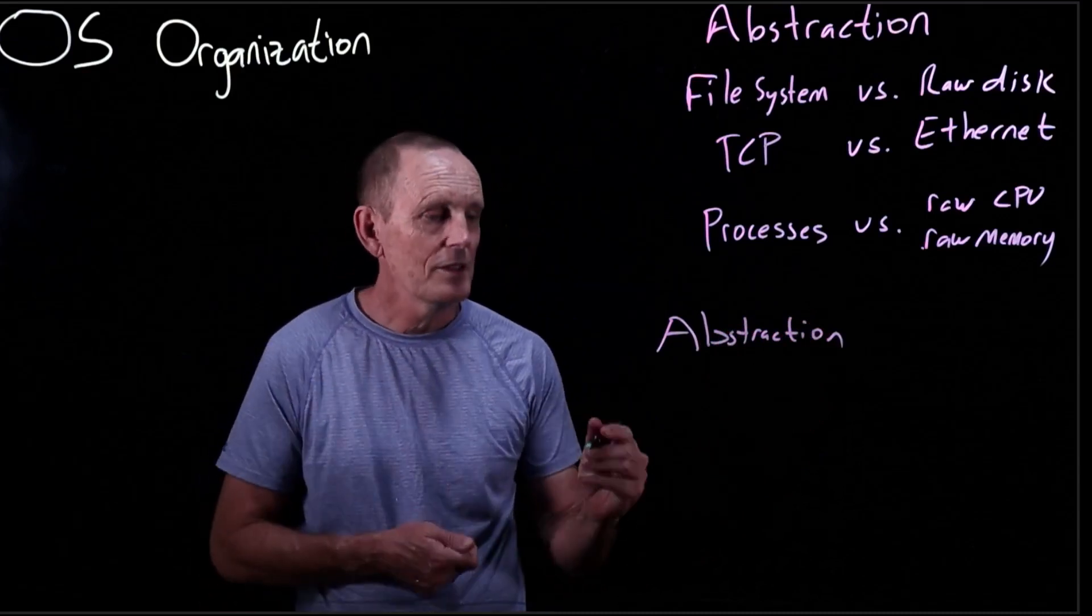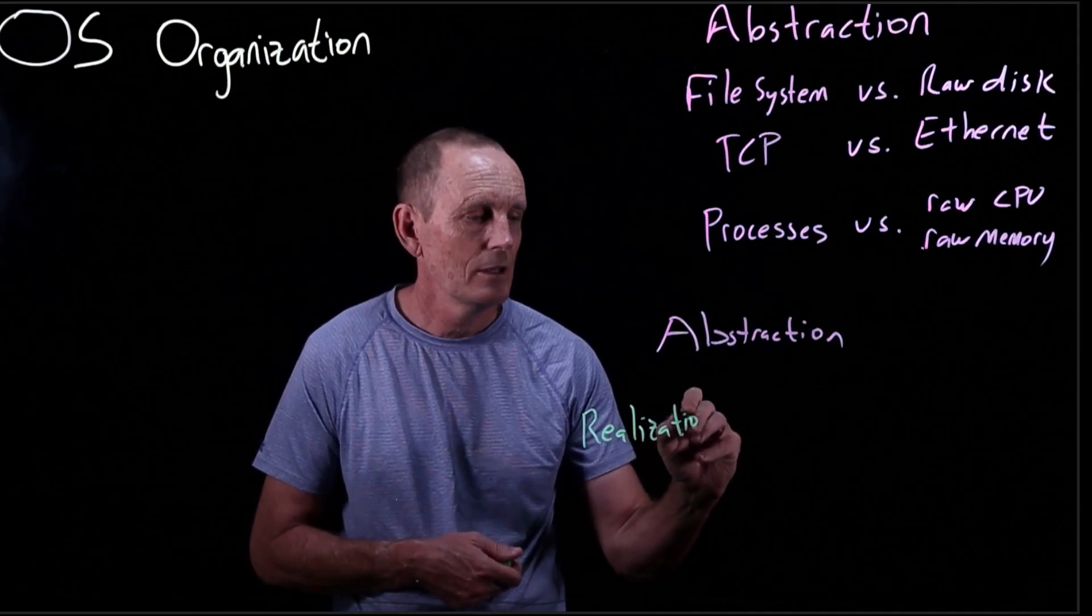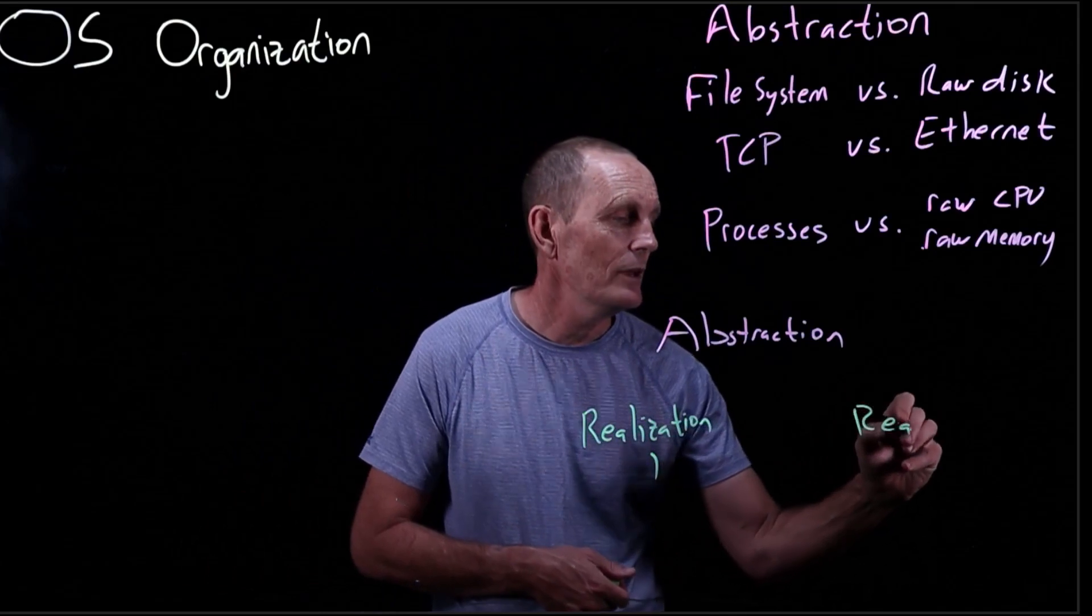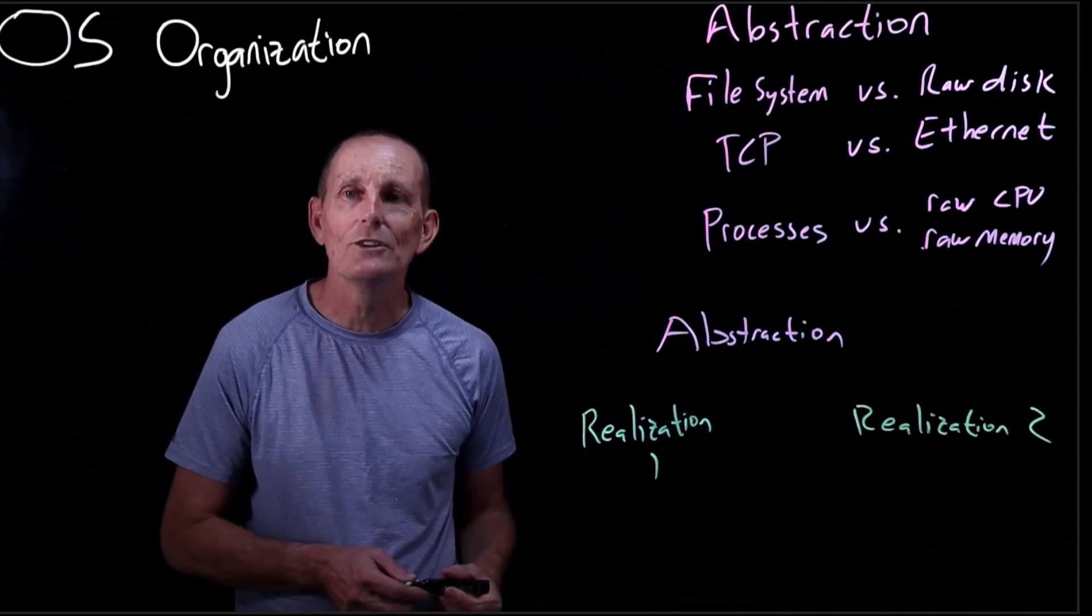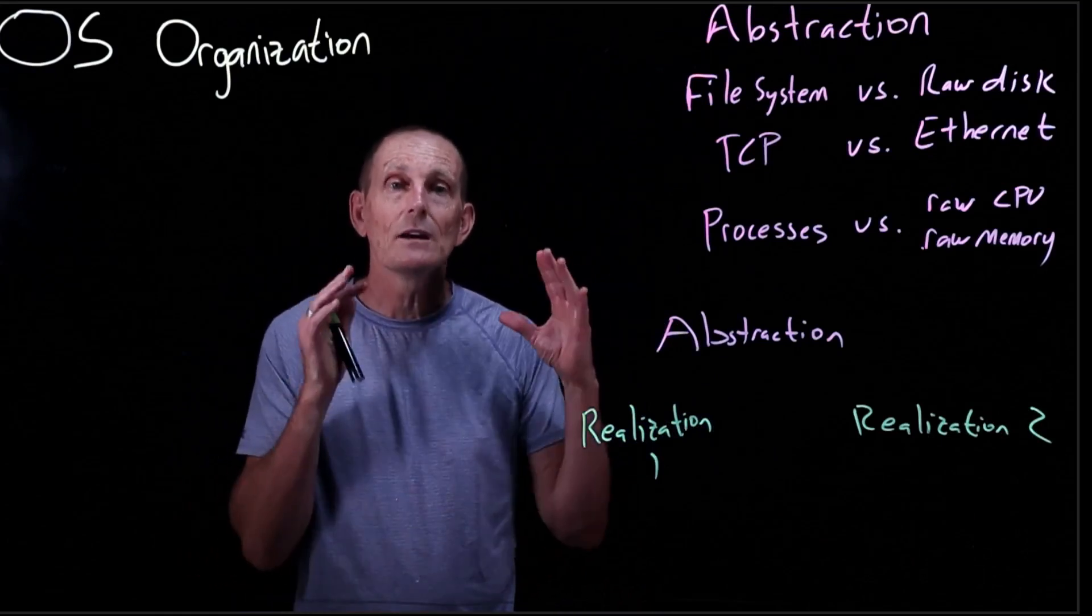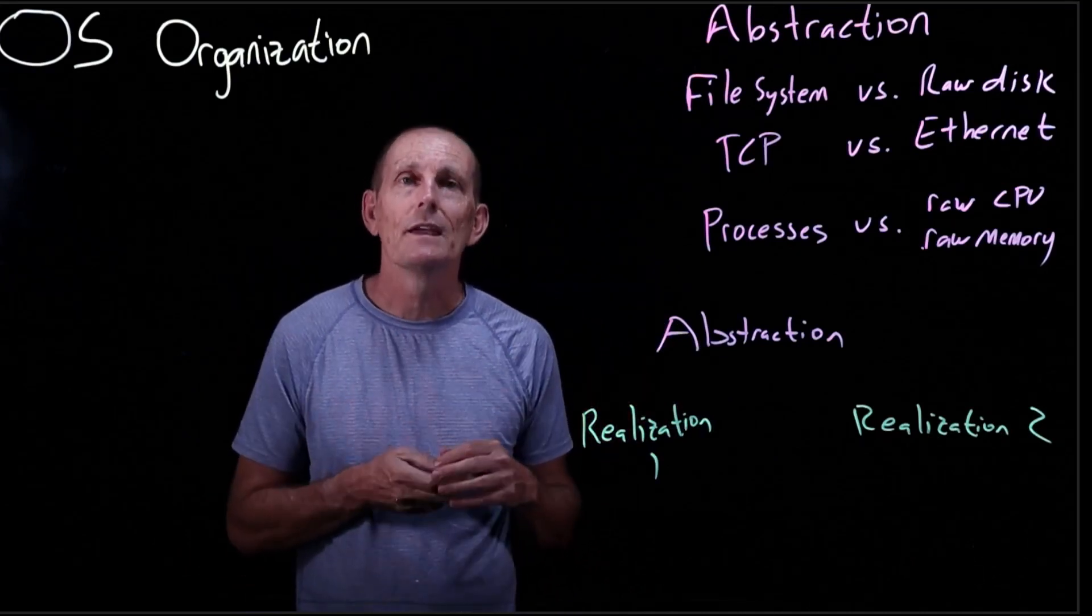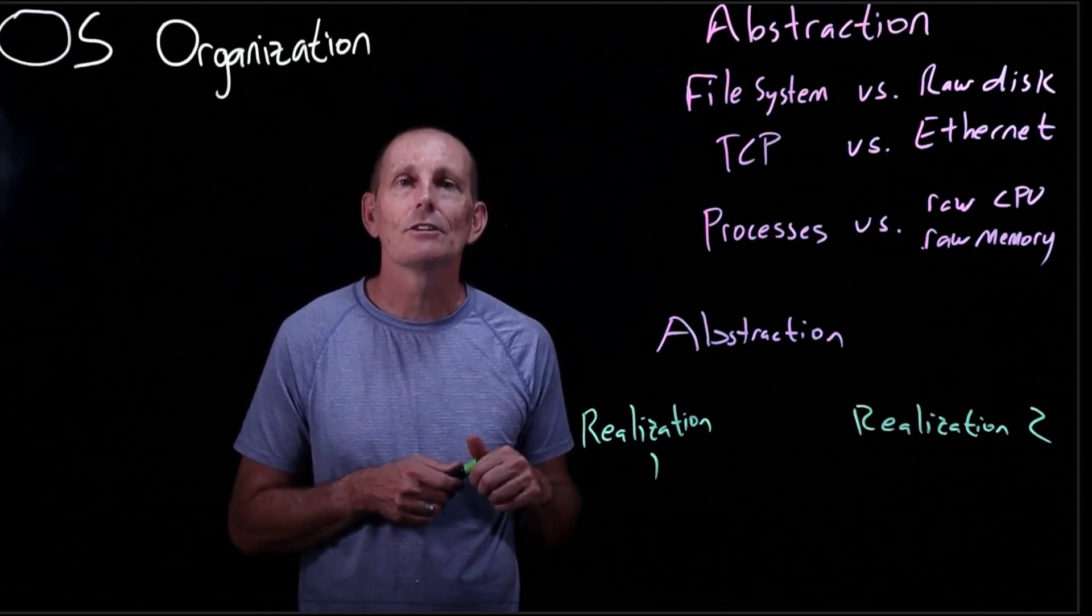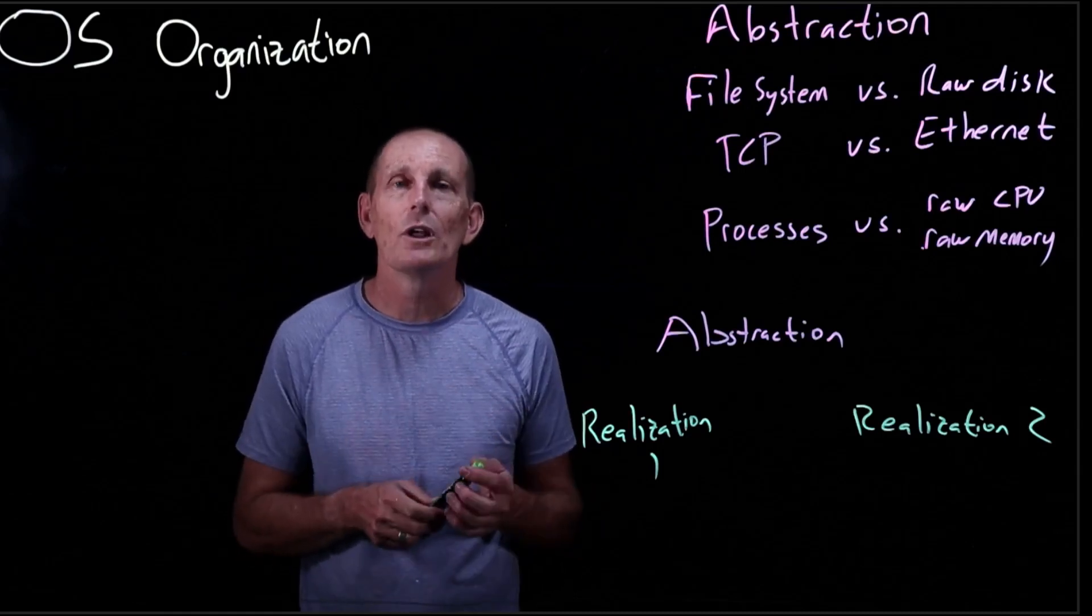We build up these abstractions that can then be realized with some actual hardware. So we can have sort of a realization one here and then a separate realization two here. That's why Unix/Linux has become so popular, because the abstractions they provided are very portable. They have worked and could be ported to many different machines and many different architectures. Portability meant you could write programs once for Unix and have them run across a large number of different realizations.